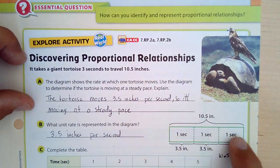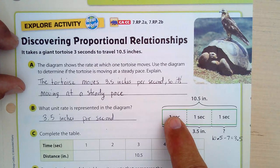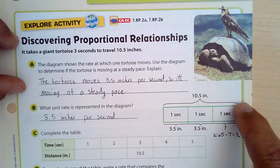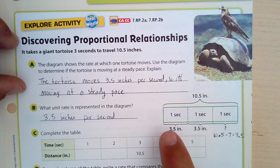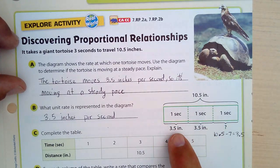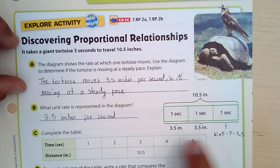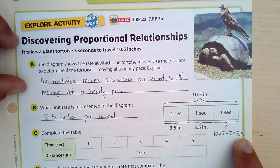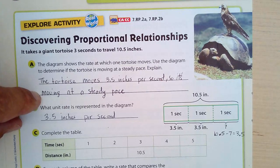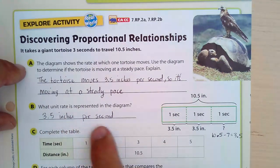we have this information: takes a giant tortoise three seconds to travel 10.5 inches. And we have this little bar diagram here. So one second, three seconds travel 10.5 inches. So one, two, three seconds to travel 10.5 inches. So if we divide it by three, each of these will be 3.5 inches. So the tortoise is moving 3.5 inches per second. So it's moving at a steady pace or also known as a constant rate. And what is that unit rate? It is 3.5 inches per second.